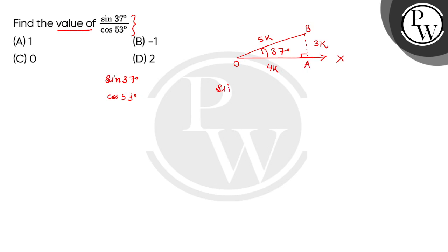Now we can see that sin 37 degree is equal to opposite side AB divided by hypotenuse OB. So this is 3 divided by 5.